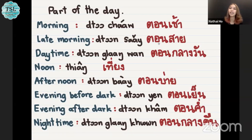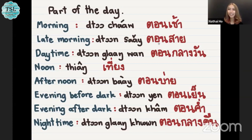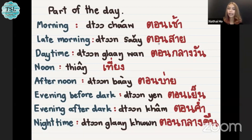Daytime, we say ตอนกลางวัน, ตอนกลางวัน. Noon time or midday, we say ตอนเที่ยง — or some people say ตอนเที่ยง. Afternoon, we say ตอนบ่าย, ตอนบ่าย.